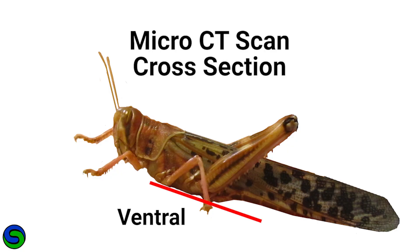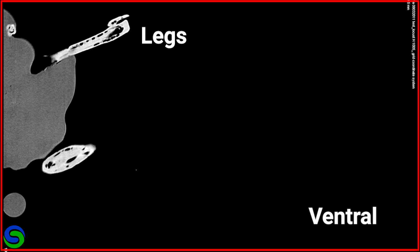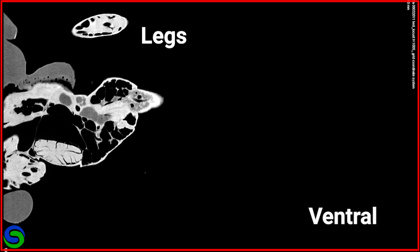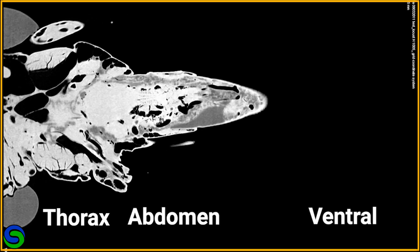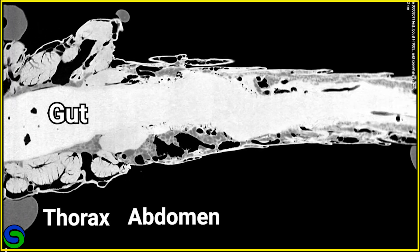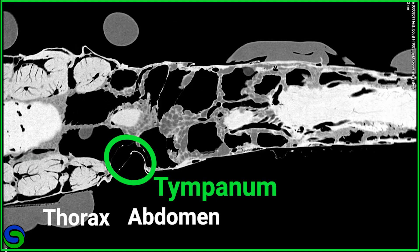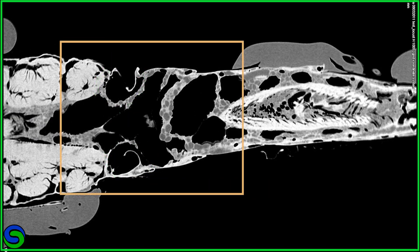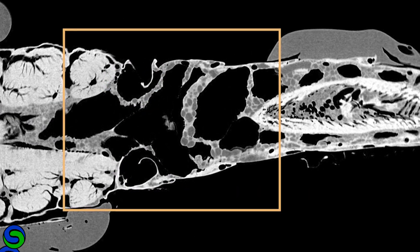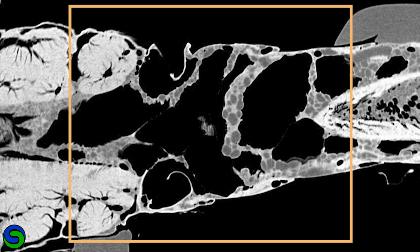The same insect was also scanned from the ventral underside to the dorsal top. Starting with the legs, the scan goes up the body with the thorax and abdomen appearing next. The solid gut is white running the length of the body. Above the gut, the tympana start to appear. Notice all of the black empty space of the air sacs that surround them. This space is needed for pressure hearing.